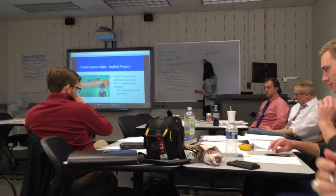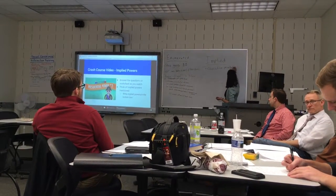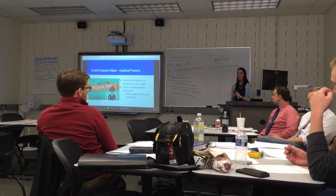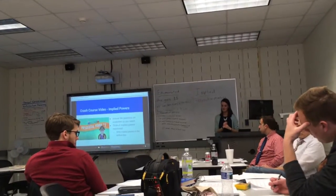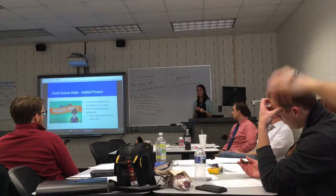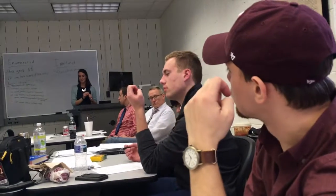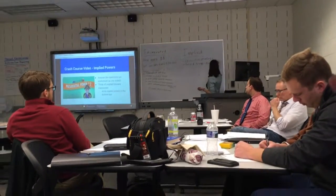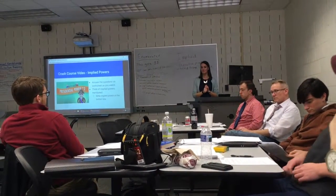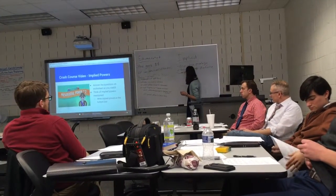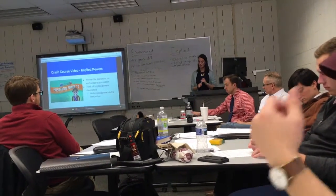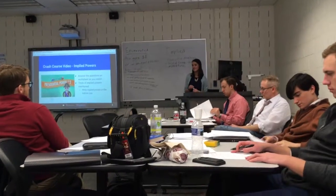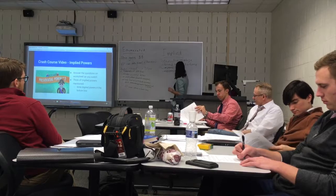So what implied powers did you guys see in this video? Executive privilege. Executive orders — though those are more in the enumerated powers. What else? Cody — send troops overseas. Yeah, so they can send troops. I'm also going to put Air Force, because they're in charge of the Air Force. They can also impound funds. And what can they do to help Congress? Make recommendations — so they can recommend legislation.